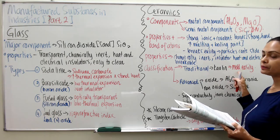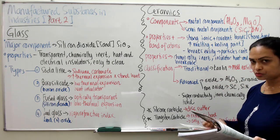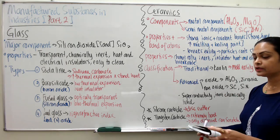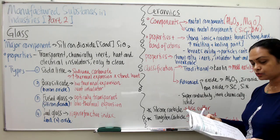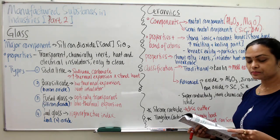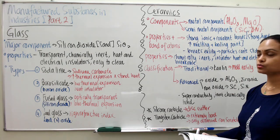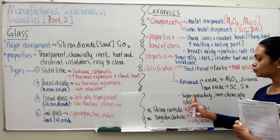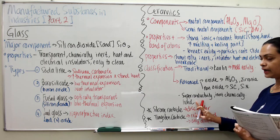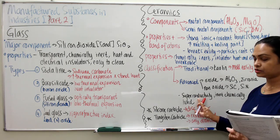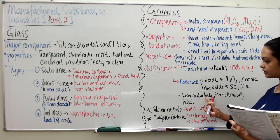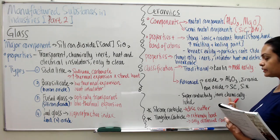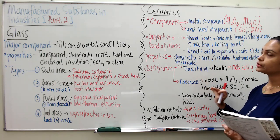Advanced ceramics are mainly used for insulation — nuclear reactors, engine parts, electrical insulators, and electrical parts — because they are very good at insulating electricity and heat. Additionally, advanced ceramics have superconductivity: they can conduct electricity at zero temperature, and they are chemically inert but hard. That is another reason why they are used as electrical conductors.